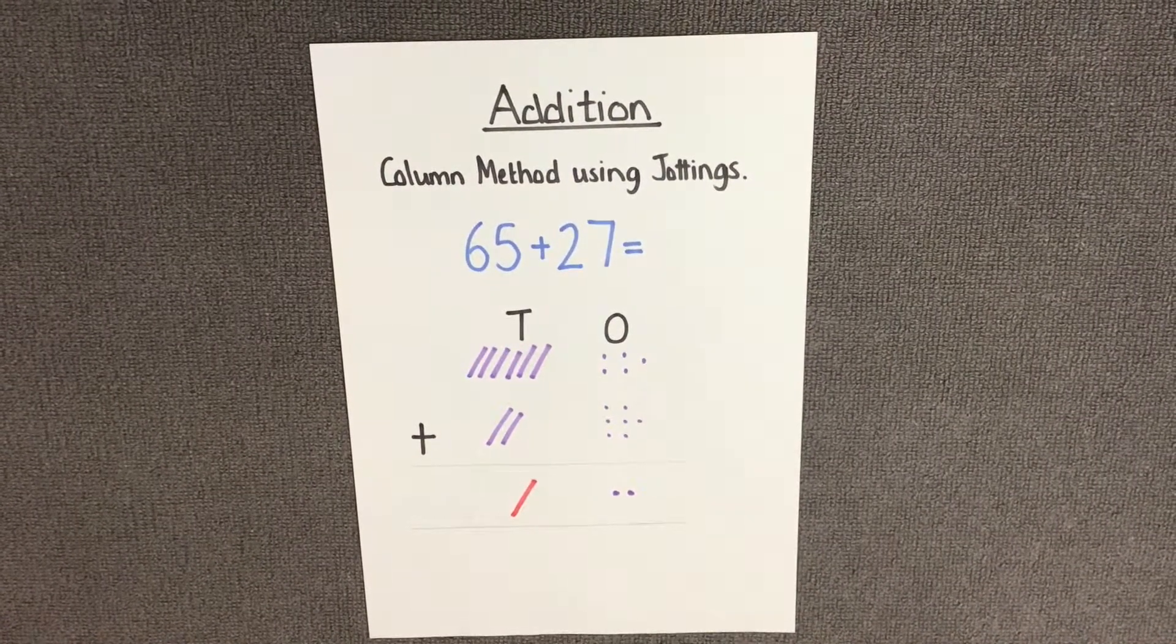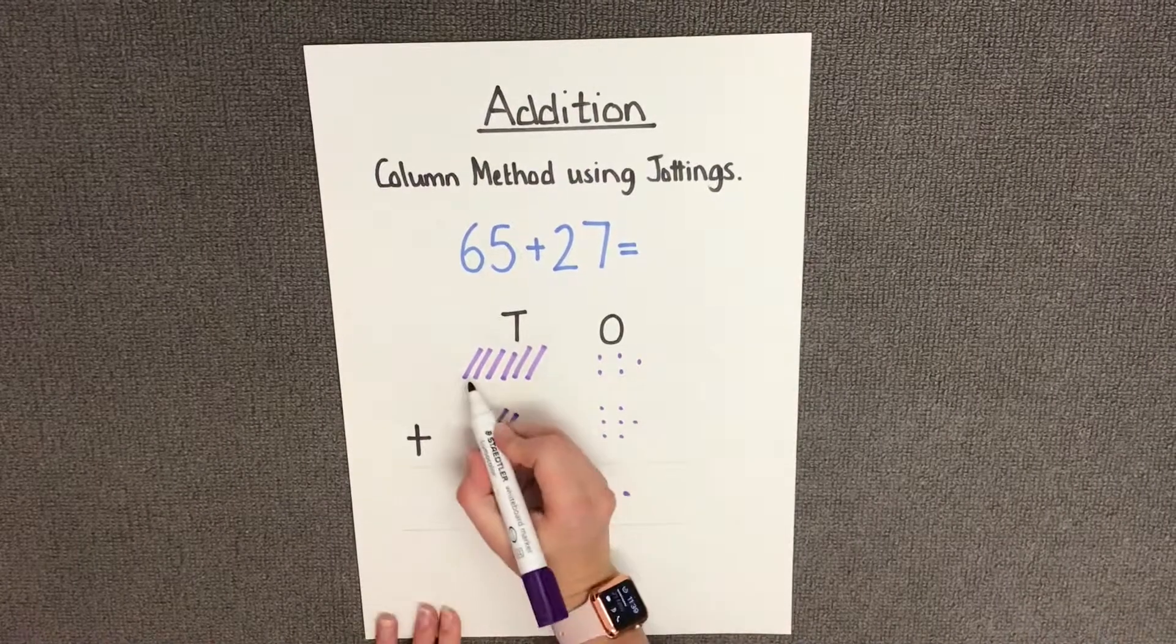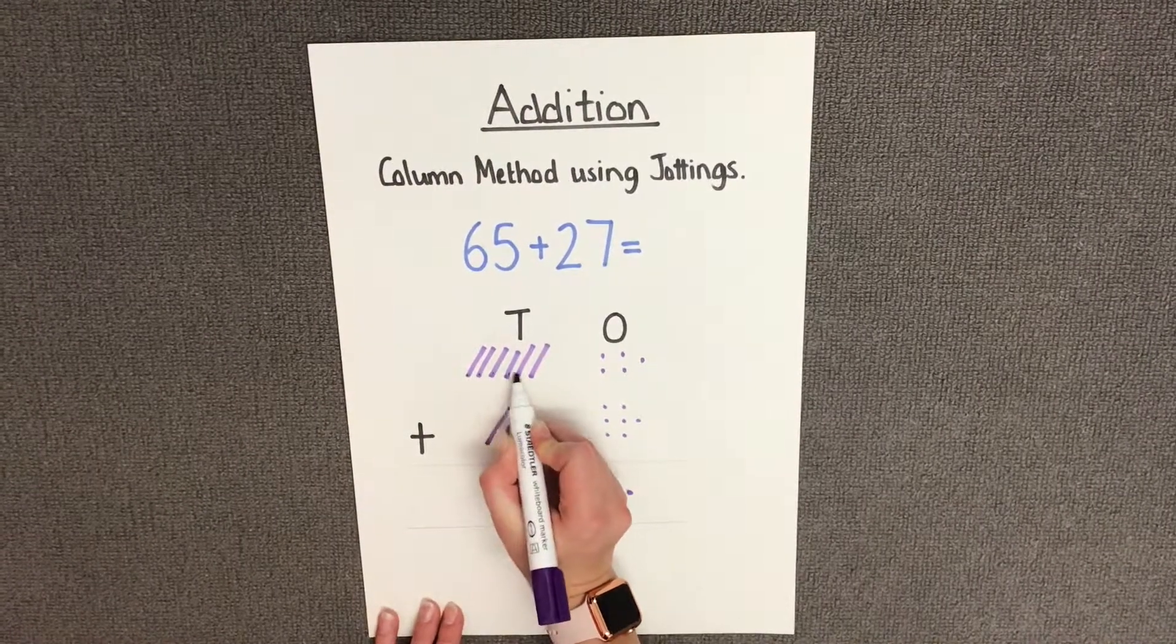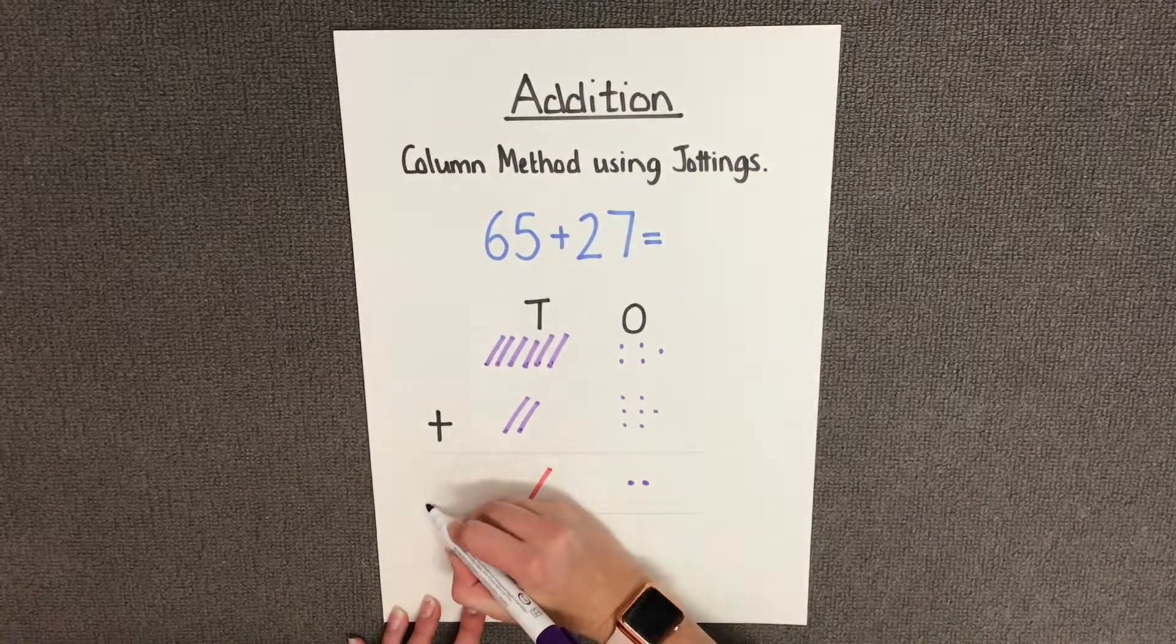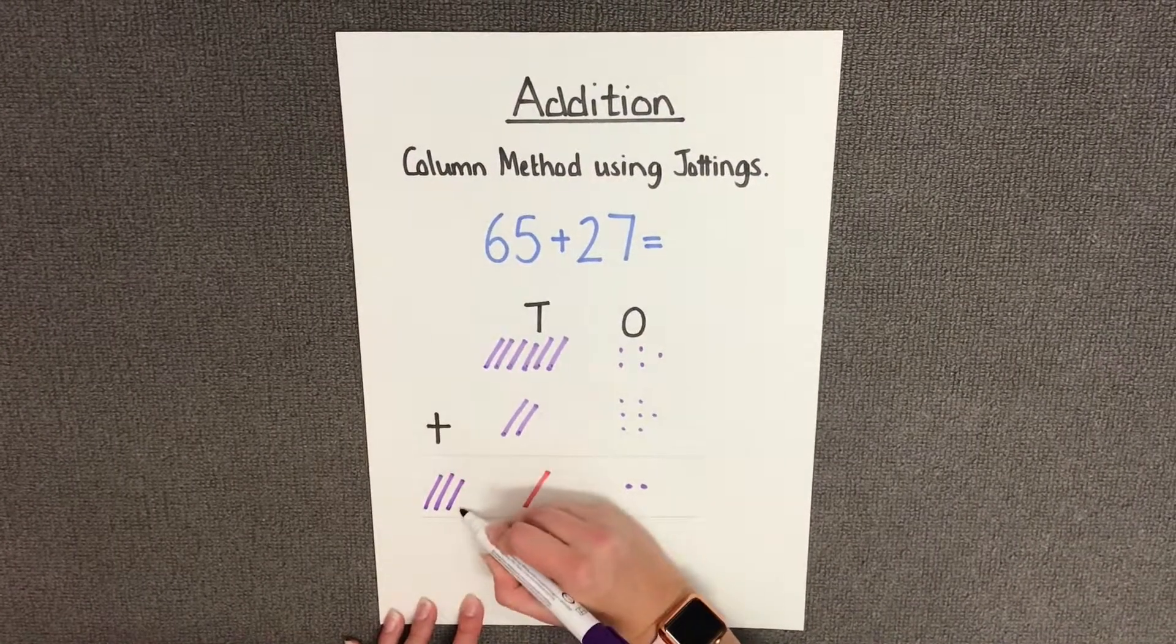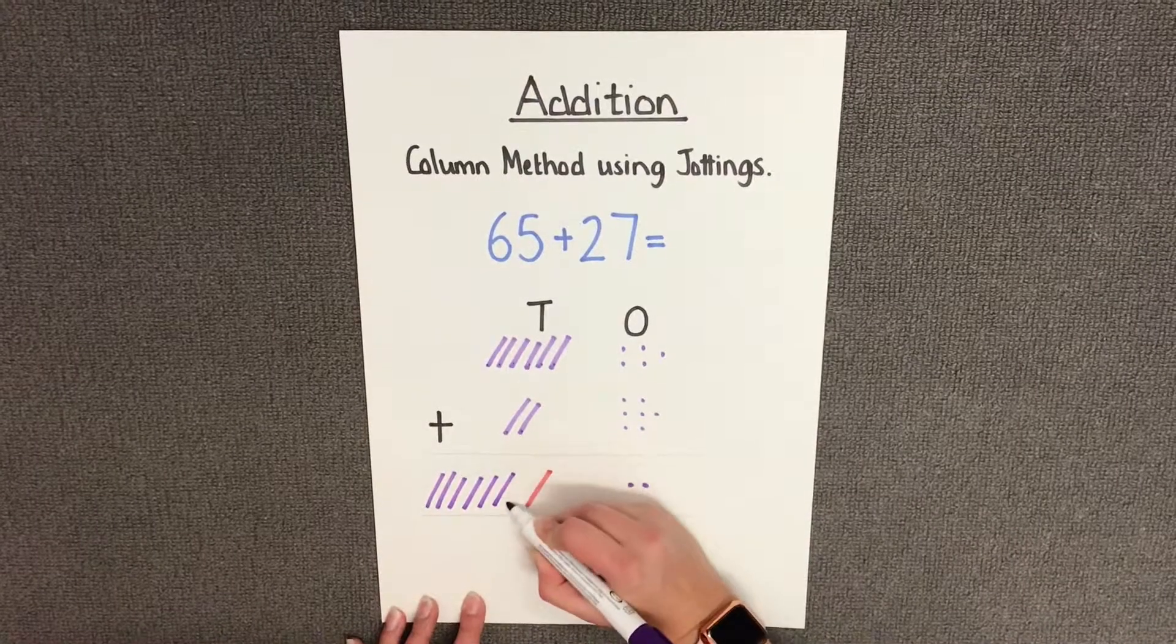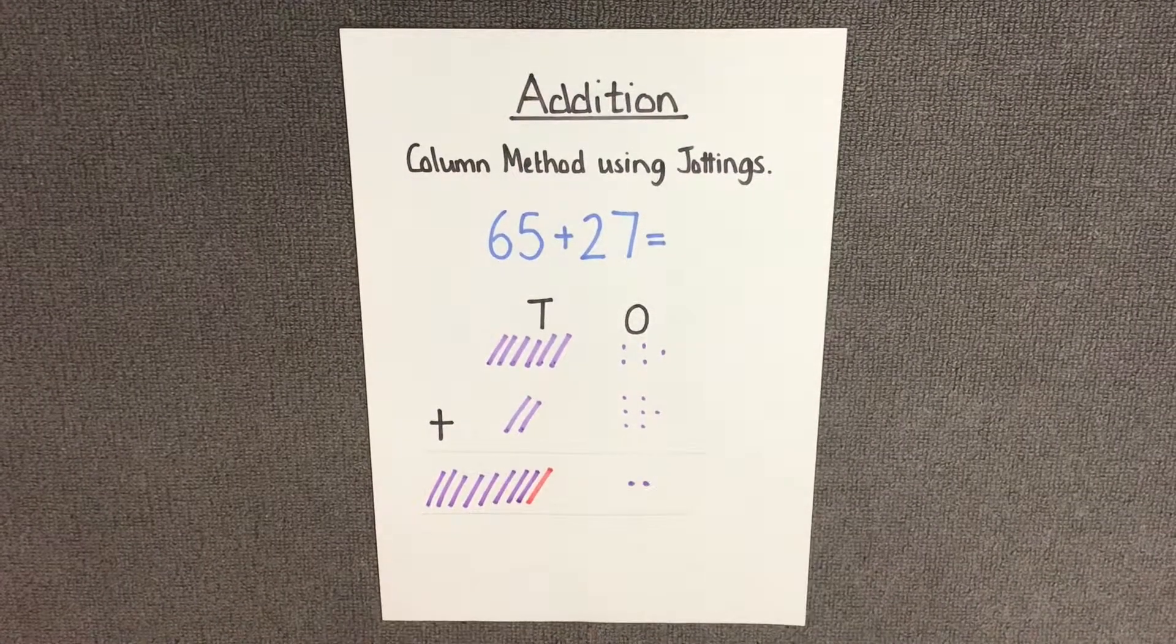Finally, we need to add up our tens. We have 1, 2, 3, 4, 5, 6, 7, 8 tens.